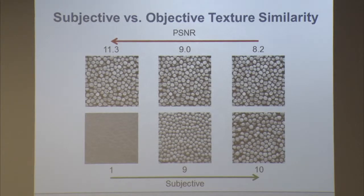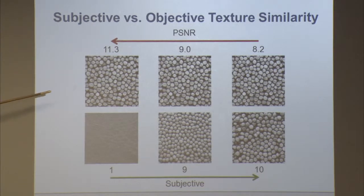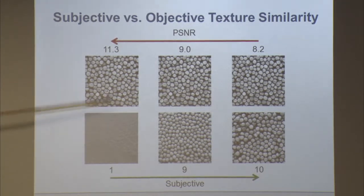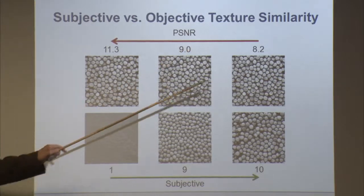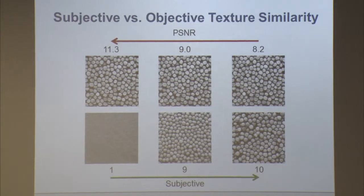Why is texture similarity difficult? PSNR is derived from mean squared error. Here are two completely different textures with a PSNR of 11, two that are closer with a lower PSNR, and two I would consider identical with an even lower PSNR. So PSNR fails at capturing subjective similarity — which moves in the opposite direction.